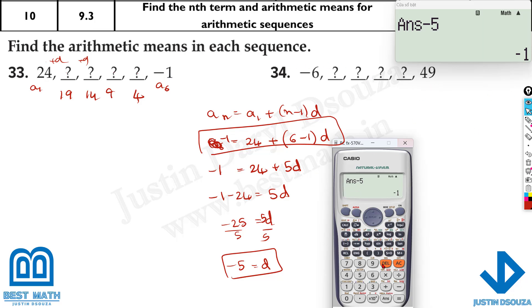Similarly, what is this over here? Now I'll directly write it because it's the electronic part. You should know the formula, but it's better to write the formula and substitute. This is 49 equals, what's the first term? Minus 6 plus n is how much? 1, 2, 3, 4, 5, 6 minus 1.